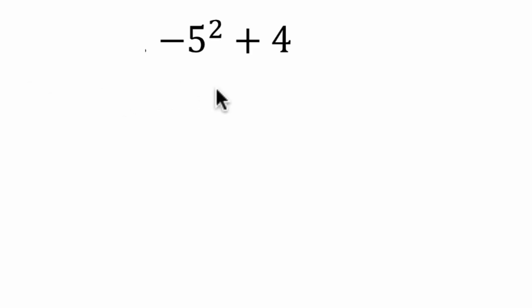So in the order of operations, before we add, we need to deal with exponents. But the tricky part is to deal with this term right here, which really I read as subtracting five squared. So I think I'm subtracting five squared. And I'll explain why that makes sense in a moment. We're going to find that and then we're going to add four.